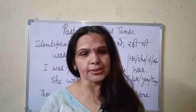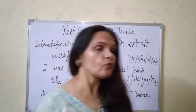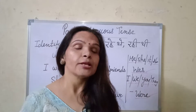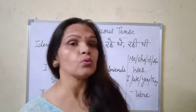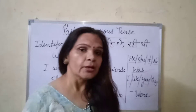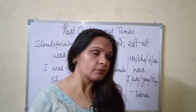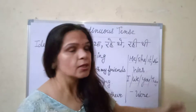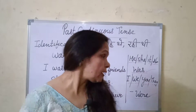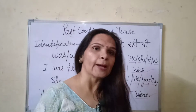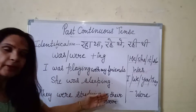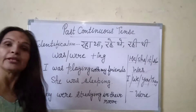All these are Past Continuous Tense sentences. In English sentences we find: was/were + verb's first form + ing. The important thing here is was/were. We use 'was' with he, she, it, or any singular subject. We use 'were' with I, we, you, they, or a plural subject. For example: I was playing with my friends, she was sleeping, they were studying in their room.